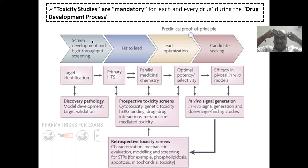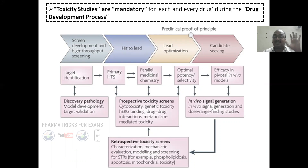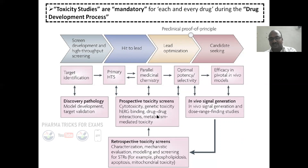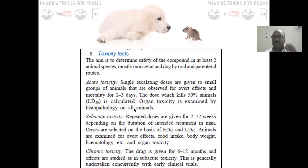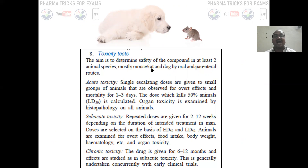That's why toxicity studies are mandatory for each and every drug. Whenever you are developing a new drug, before it comes to market, you must study its toxic properties — compulsory, very clearly and neatly. The aim of toxicity tests is to determine the safety of a compound using at least two animal species — most probably mouse or rat, and dog. You must perform acute, subacute, and chronic toxicity tests.